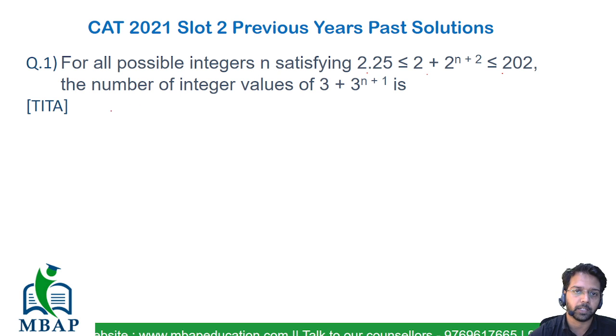The question is first finding out the range of the given values of n using this expression. Let's start with the first expression on the right-hand side. The expression says 2 + 2^(n+2) ≤ 202.